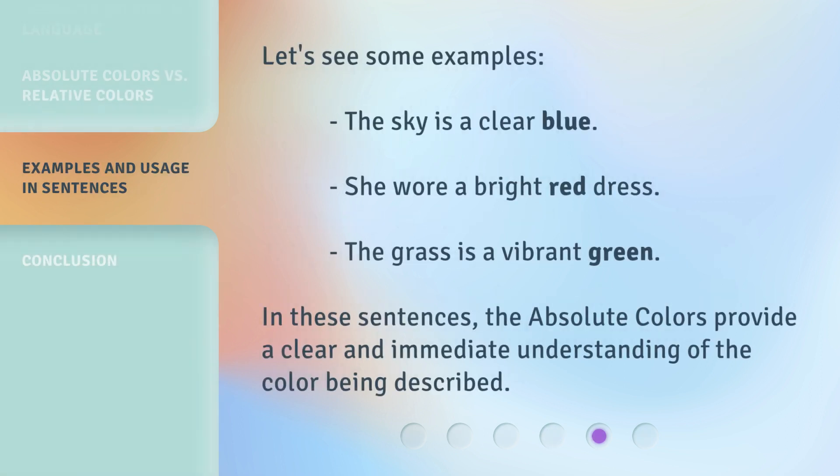Let's see some examples. 'The sky is a clear blue.' 'She wore a bright red dress.' 'The grass is a vibrant green.' In these sentences, the absolute colors provide a clear and immediate understanding of the color being described.